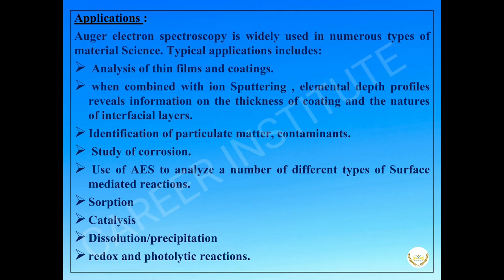Applications of Auger electron spectroscopy: Auger electron spectroscopy is widely used in numerous types of material science. Typical applications include analysis of thin films and coatings. When combined with ion sputtering, elemental depth profiles reveal information on the thickness of coating and the nature of interfacial layers. It also helps in the identification of particulate matter and contaminants.